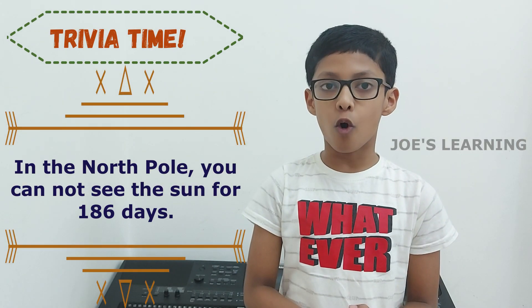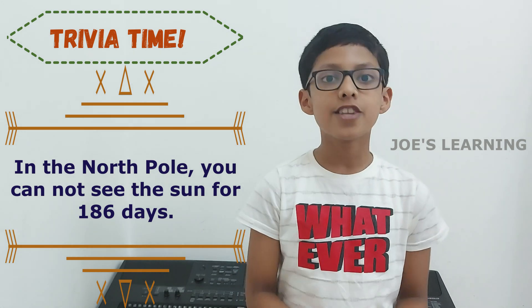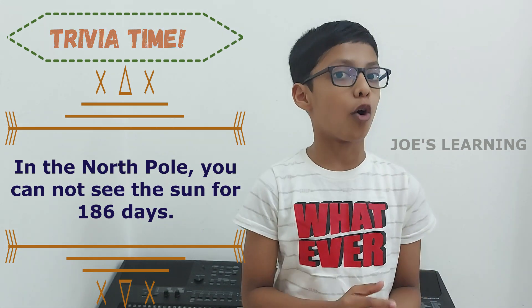Trivia time! Did you know that for 186 days you cannot see the Sun in the North Pole? Different theories on how the solar system originated began to appear. Now, let us look at two of these theories.